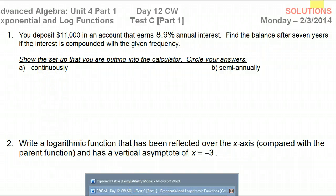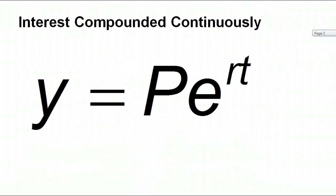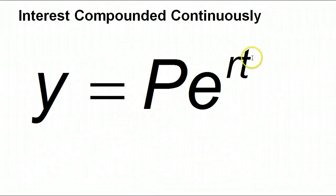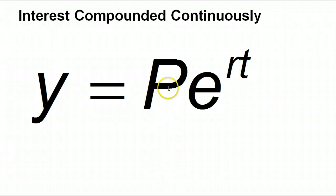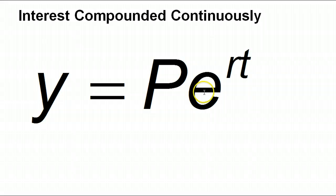We call it the PERT formula because if you look at it just right, it sort of spells the word PERT. If you see that it's compounded continuously, this is the formula we're going to use. P is the initial amount, E is a constant (approximately 2.72), R is the rate in decimal form, and T is the time.